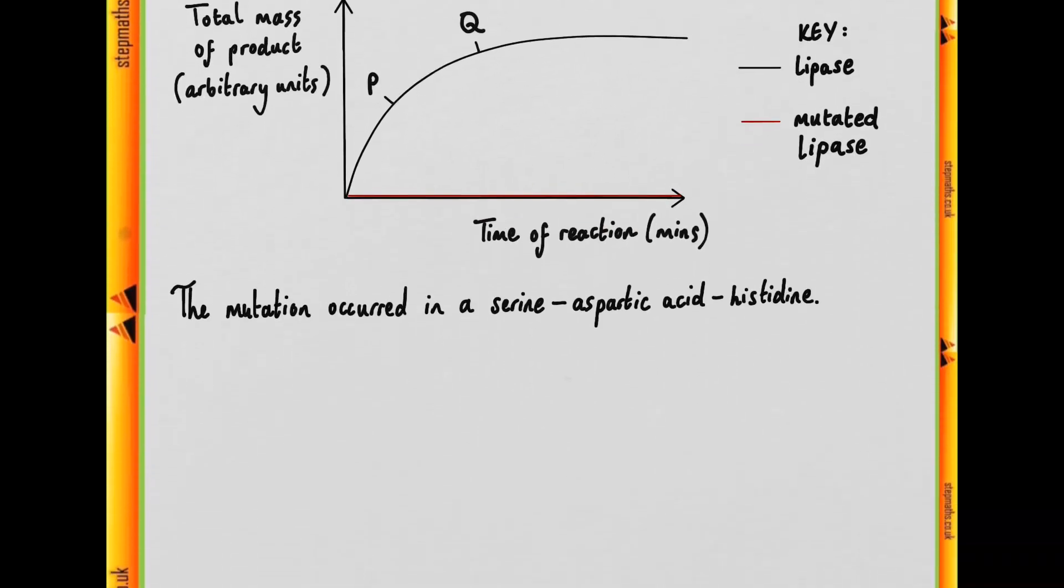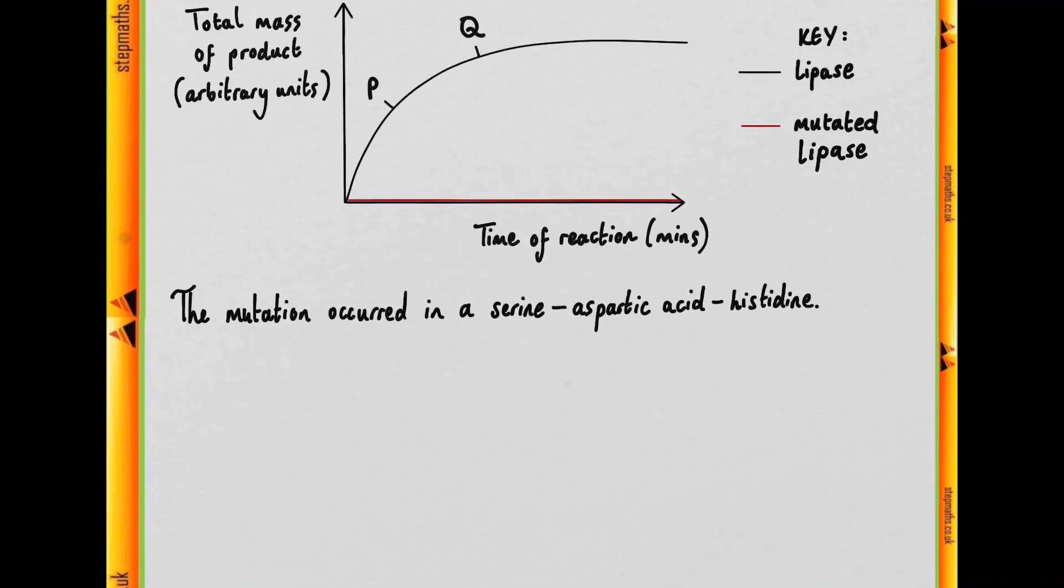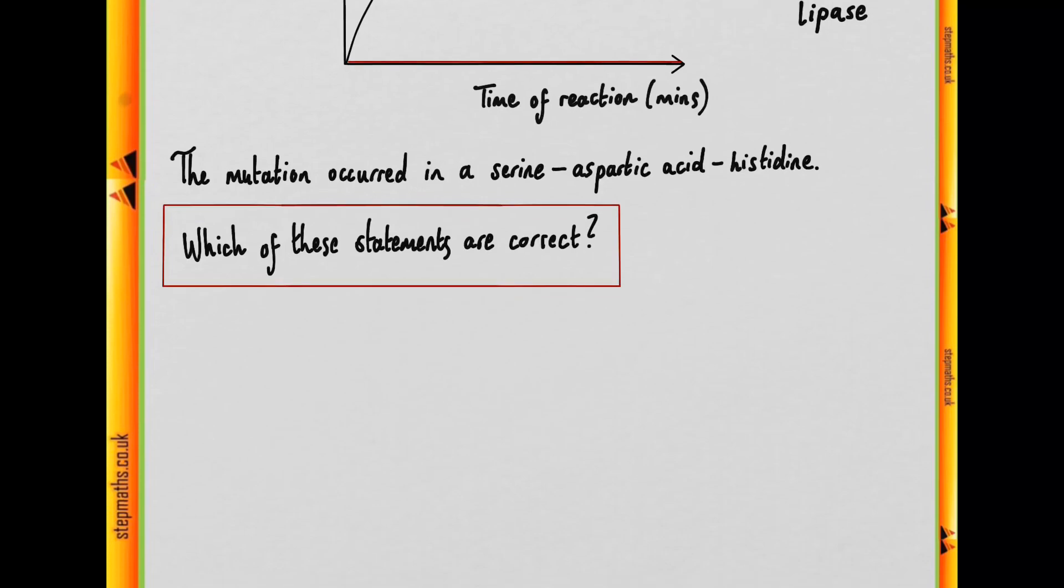Bearing that in mind, we're told that the mutation occurred in a serine-aspartic acid-histidine region. So this is a sequence of three adjacent amino acids, and we're asked which of the following statements are correct.